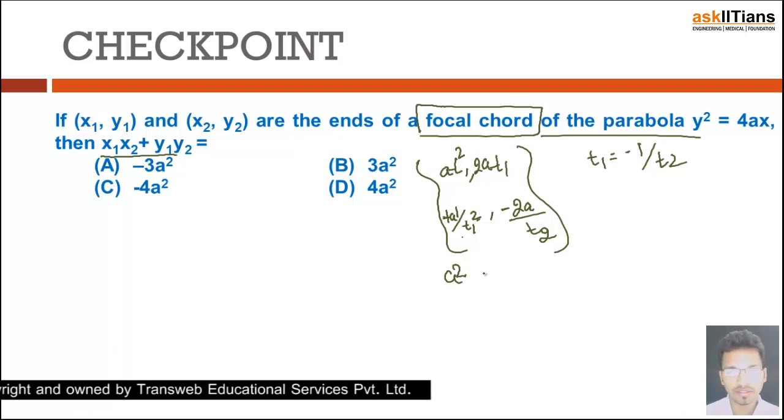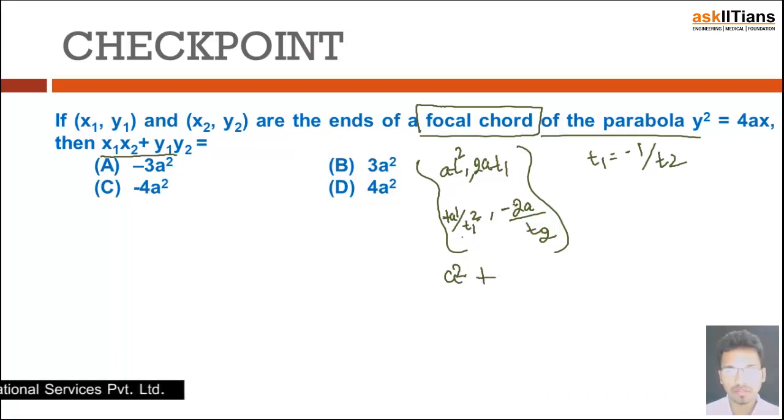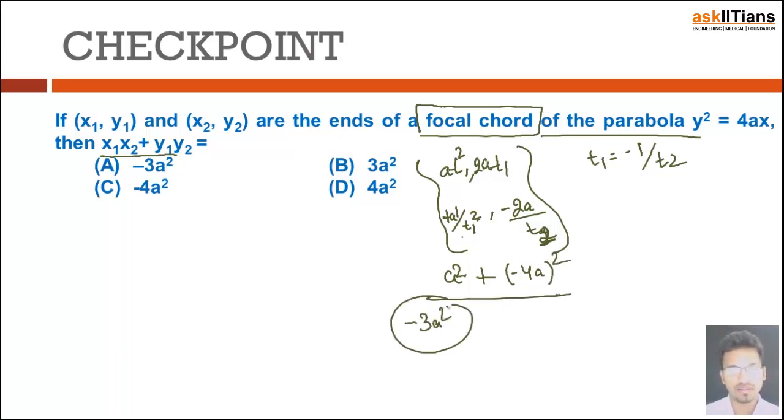...a² and t₁² will get cancelled, plus this will be -4a² and again t₁ and t₂ will get cancelled, this will be t₁ here.